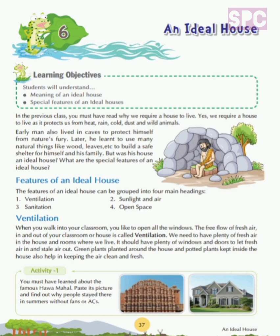In the previous class, you must have read why we require our house to live. We require a house to protect us from heat, rain, cold, dust and wild animals. Early man also lived in caves to protect himself from nature's fury. Later, he learned to use many natural things like wood, leaves, etc. to build a safe shelter for himself and his family.